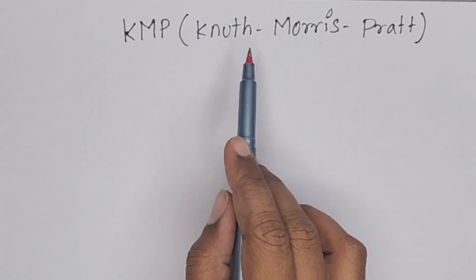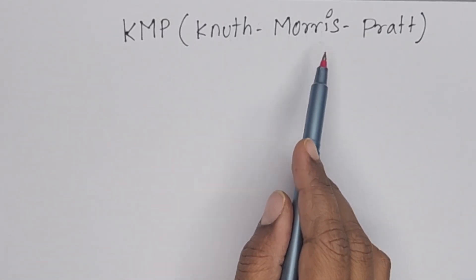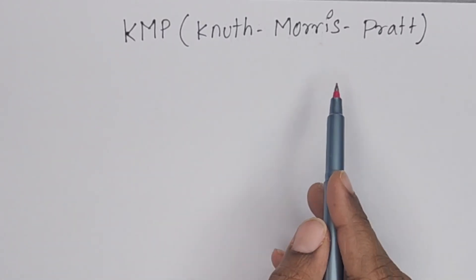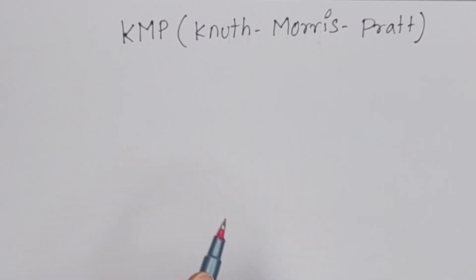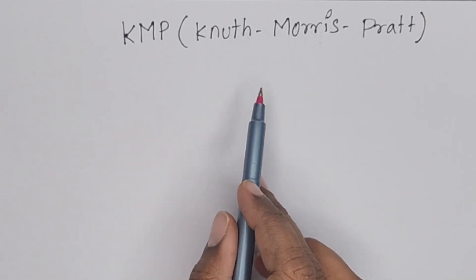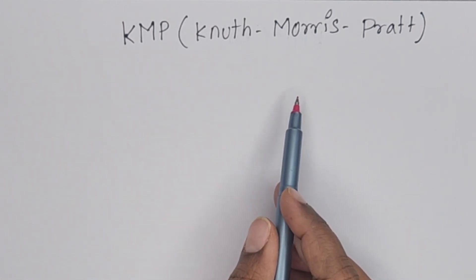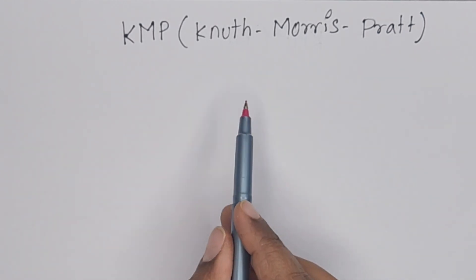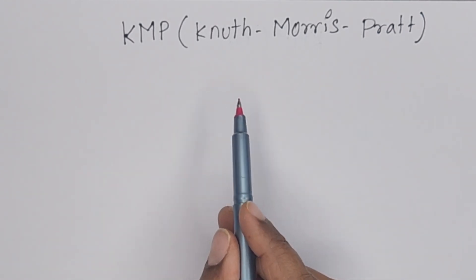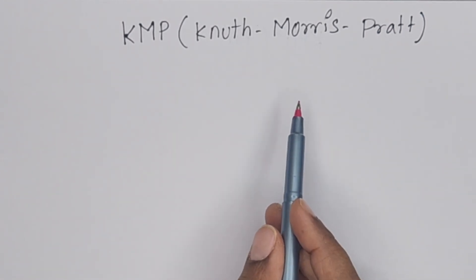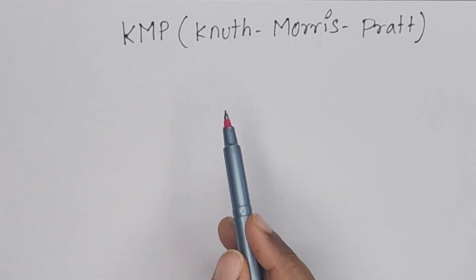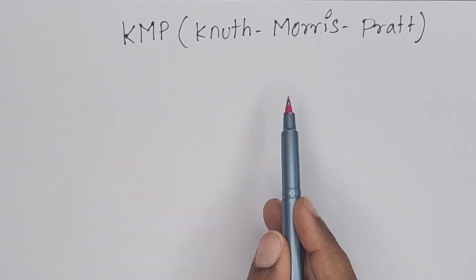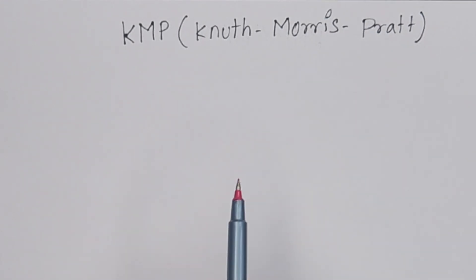The topic is KMP, also known as the Knuth-Morris-Pratt algorithm. This is one of the pattern matching algorithms. In a previous video, I explained the basic algorithm, also called the brute force algorithm.